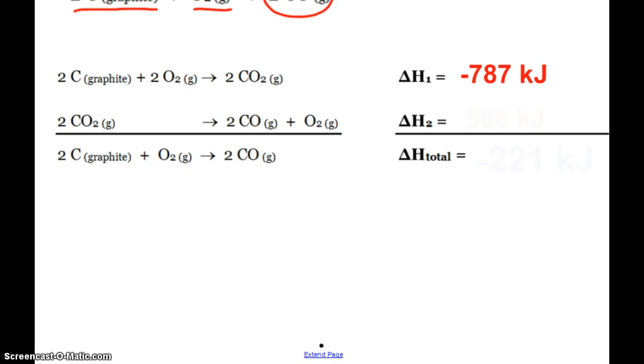So the first reaction, typically you find on a table that it's negative 393.5 kilojoules per mole of carbon dioxide formed. But since there's two moles formed, then my delta H would be double negative 787. Again,